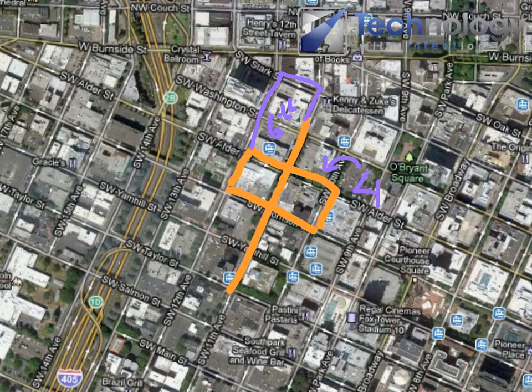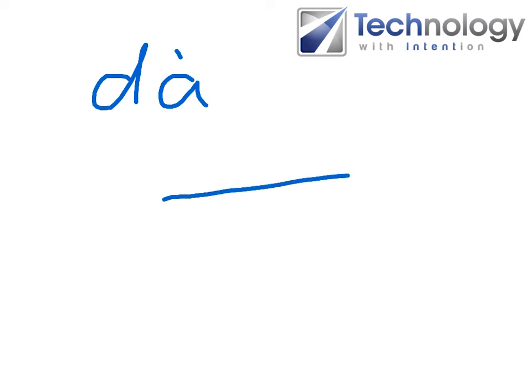Flipped instruction has great value in foreign language classes — it allows teachers to explain concepts that can be reviewed later for homework, and students who were absent can still follow along. For example, in a basic Mandarin Chinese class, learning the word for 'big,' which is 'da' — this is how it would be written in English, but there's a specific stroke order for the character in Mandarin Chinese. Using screencasting, I can explain as I write: one, two, three. I can use the pen to mark the stroke order.